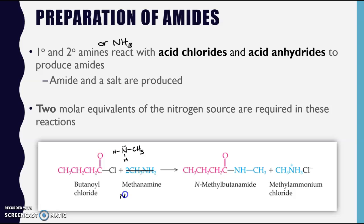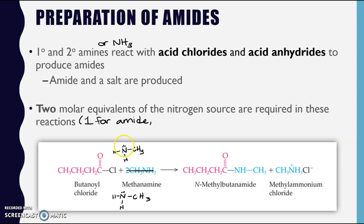I'm drawing it structurally rather than condensed so we can see what's happening. I draw two molecules of the amine, because I want to see what role these two play in the formation of the amide. One of these is going to bond to the carbonyl carbon to make the amide - so one for the amide. It comes here and we get a bond between the carbonyl carbon of the acid chloride and the nitrogen of the amine.